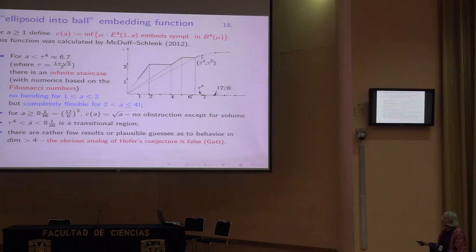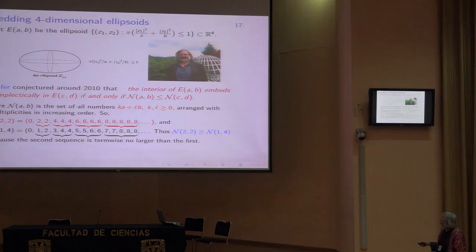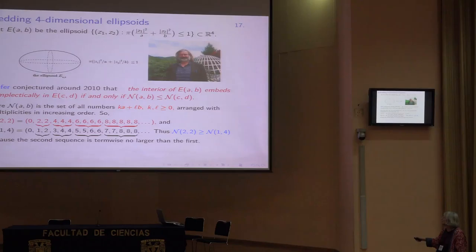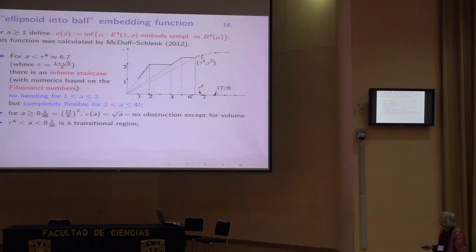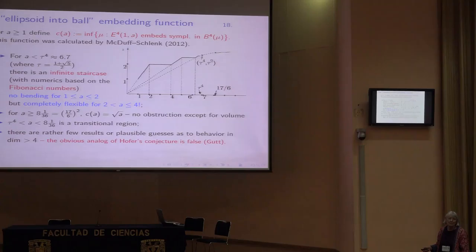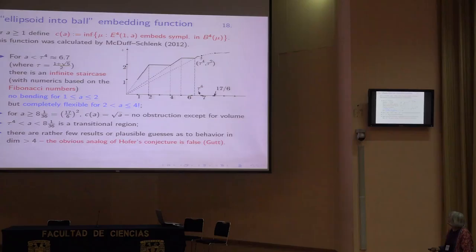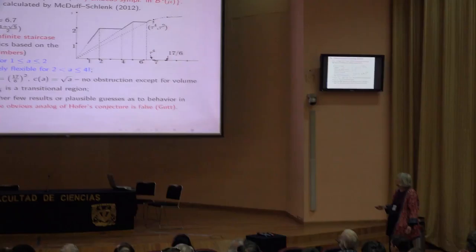Dimension 4 is always special. If we try to go beyond dimension 4, we don't know very much. There's an obvious analog of Hofer's conjecture in higher dimensions — you take the sequence of numbers k₁A + k₂B + k₃C for an ellipsoid in ℝ⁶ — but we know that's not true. We have negative results showing some embeddings are possible that would contradict the naive conjecture. There are some results, but we don't understand the six-dimensional or eight-dimensional versions of the ellipsoid embedding problem at all completely.